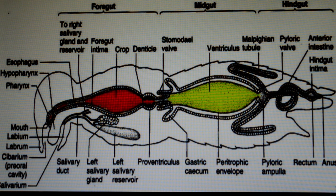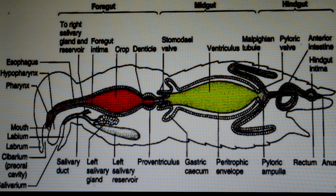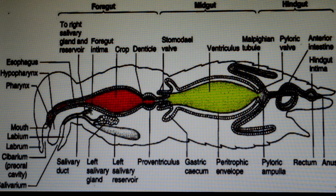Looking at the functions of the whole digestive system: the foregut is involved in ingestion of food particles, passage of food to the midgut, temporary storage of food, and partial digestion of food. Because of salivary gland secretion, saliva containing digestive enzymes helps in partial digestion of food in the foregut itself. It also prevents regurgitation of food because of the stomodial valve.